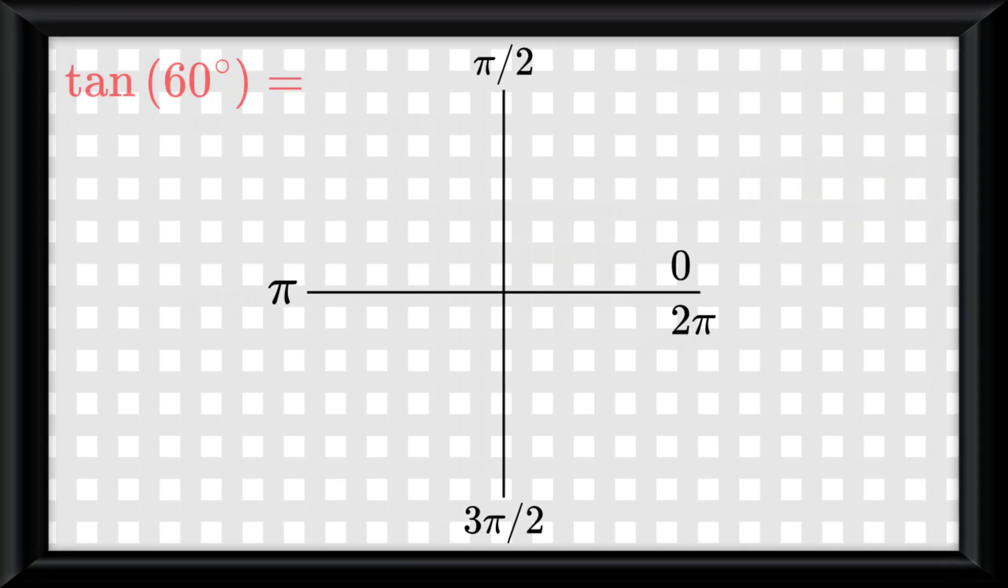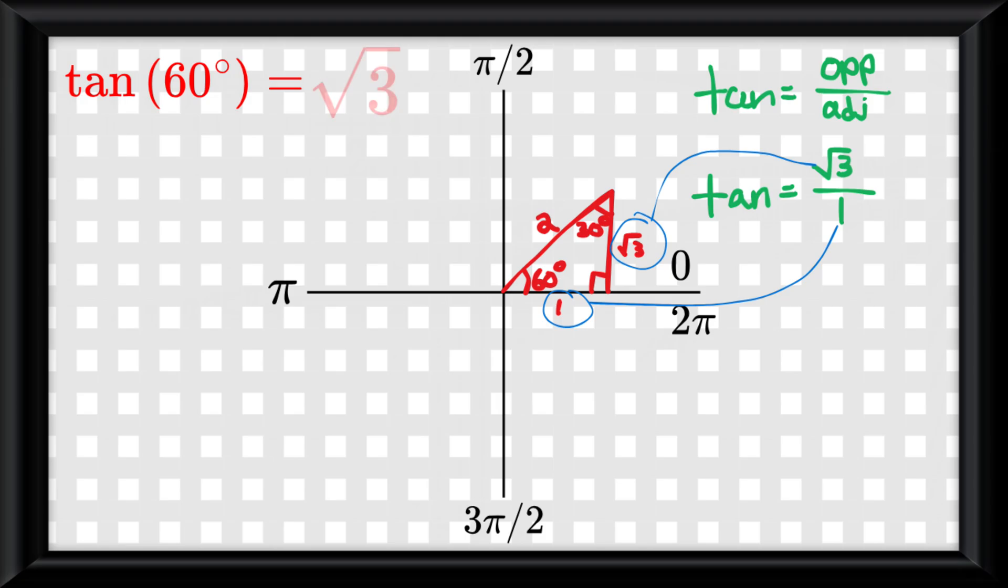And if you wanted to find, say, tangent of 60 degrees or pi over 3 radians, you construct your 30-60-90 triangle. We know tangent is opposite over adjacent, which in this case is root 3 over 1, or root 3.